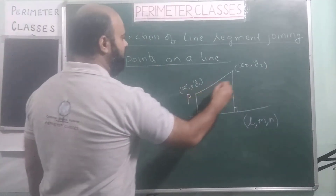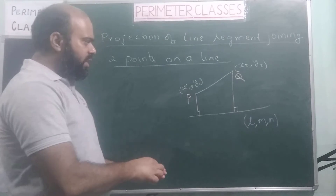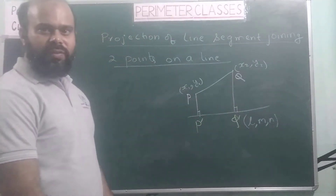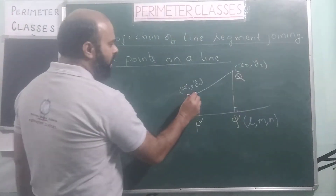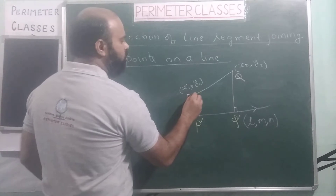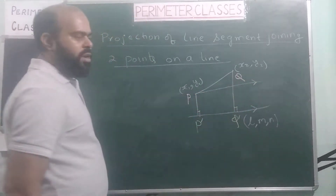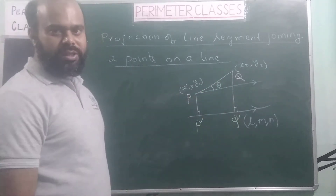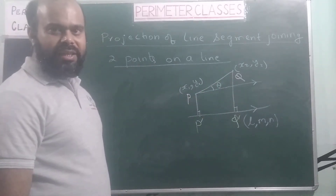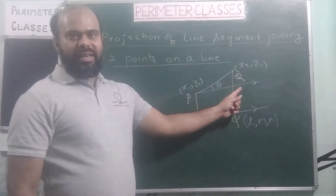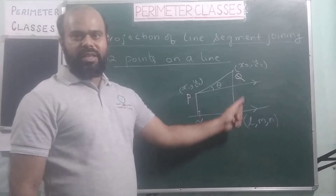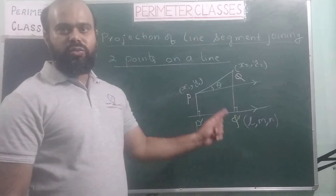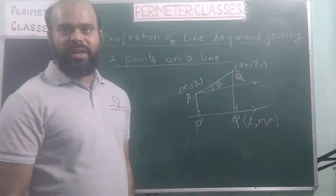If we consider that these are the points P and Q, and their projections are P' and Q', then what is P'Q'? If we draw a line parallel to the given line through P, then we know that this angle is theta, which is not yet available to us. Can we get that angle theta? This line has direction cosines L, M, N, and this particular line segment has direction ratios X2 minus X1, Y2 minus Y1, Z2 minus Z1.